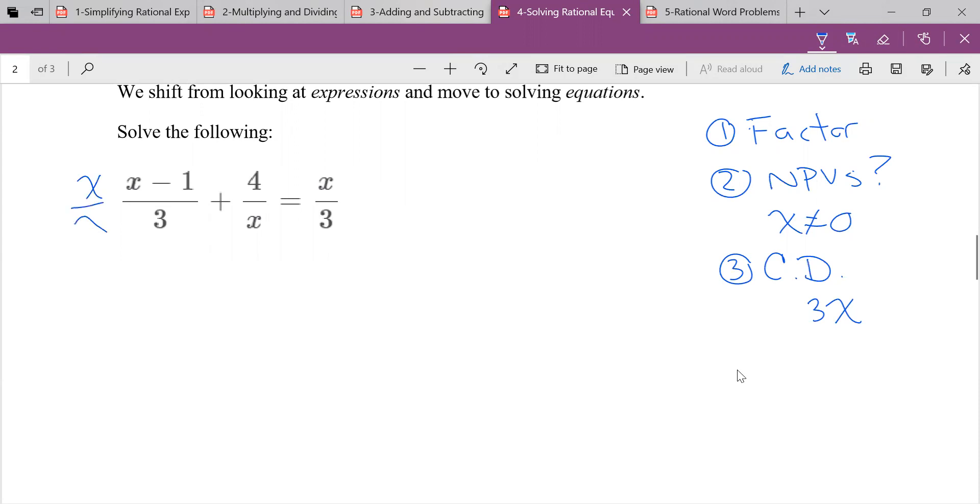So now let's get that common denominator. So again, I'm going to multiply everything by one in a sneaky way. So I'm going to multiply that by x over x, 3 over 3. Don't forget the other side of the equation, x over x.